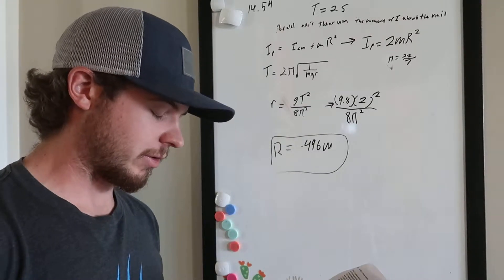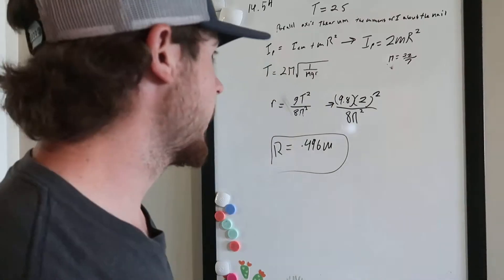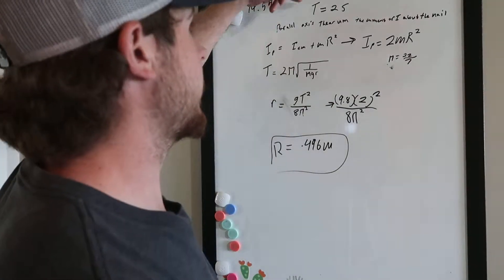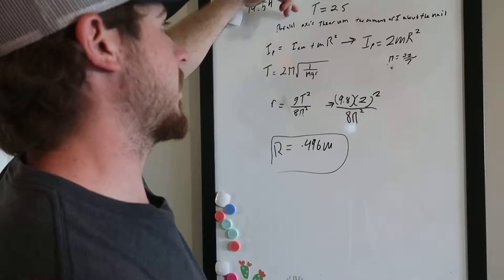What must the hoop's radius be? So we're looking for the radius. We know the period is two seconds, and using the parallel axis theorem,